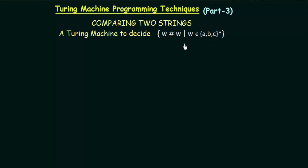We have to see if the first half of the string is equal to the second half. This is a very important subroutine in Turing machines because in many cases we need to compare whether the first half equals the second half. Let's see how we can design a Turing machine to perform this task.